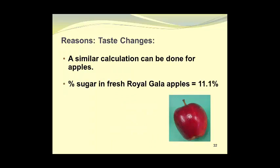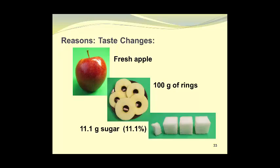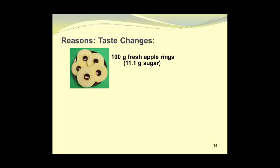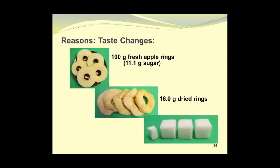A similar calculation can be done for apples. The percent sugar in fresh Royal Gala apples is about 11.1%. We'll take fresh apples and prepare 100 grams of apple rings or apple slices. These apple rings will contain 11.1 grams of sugar, which can be represented by approximately 3 and a third sugar cubes. Here we have 100 grams of fresh apple rings containing 11.1 grams of sugar. When dried, this will give us 16.0 grams of dried apple rings. We still have 11.1 grams of sugar in these dried apple rings, and that will account for 69% of the weight of the dried apple rings.